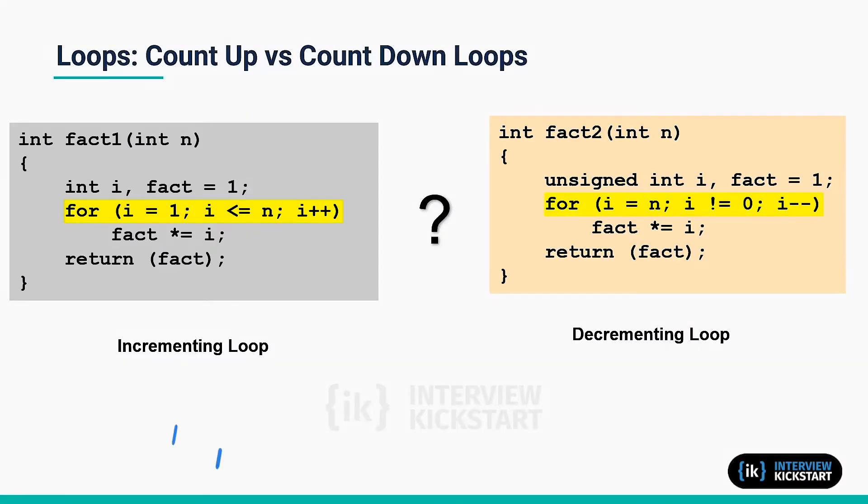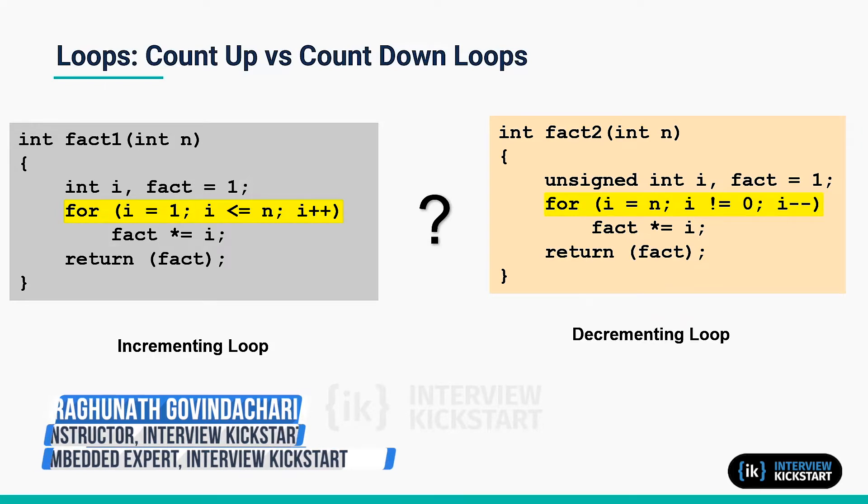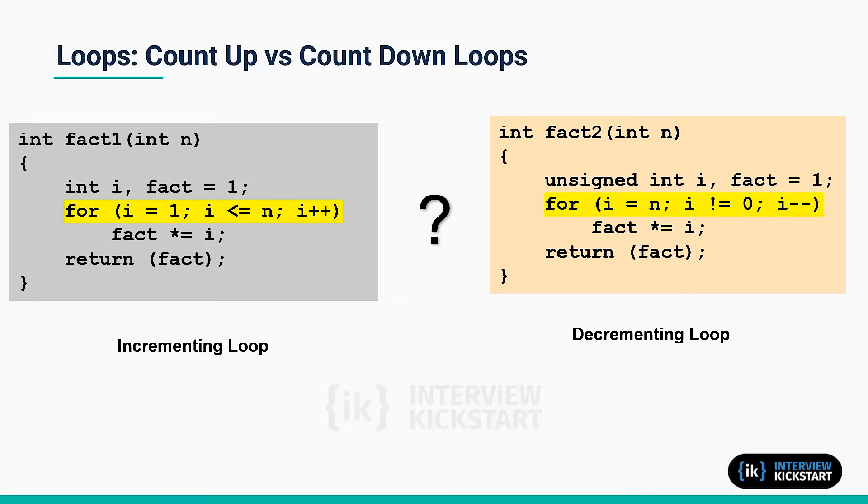Let's look at a simple example of how the source code has an impact on what the compiler generates in the object code. So here are two versions of computing a factorial. Mathematically they are identical. It's a product of a sequence of numbers from 1 to n.